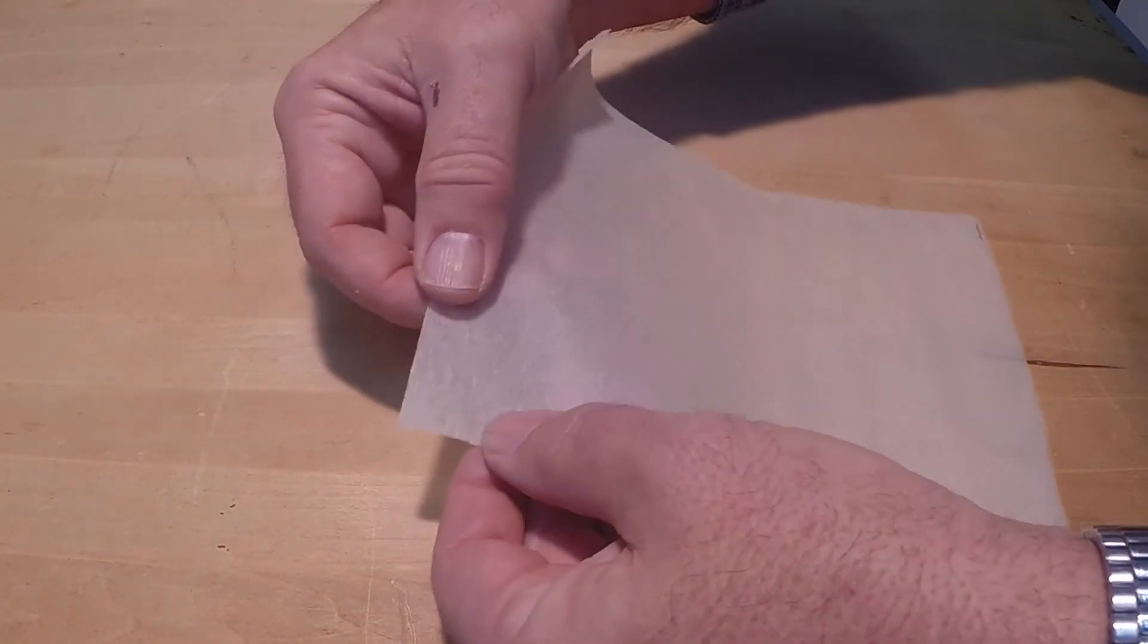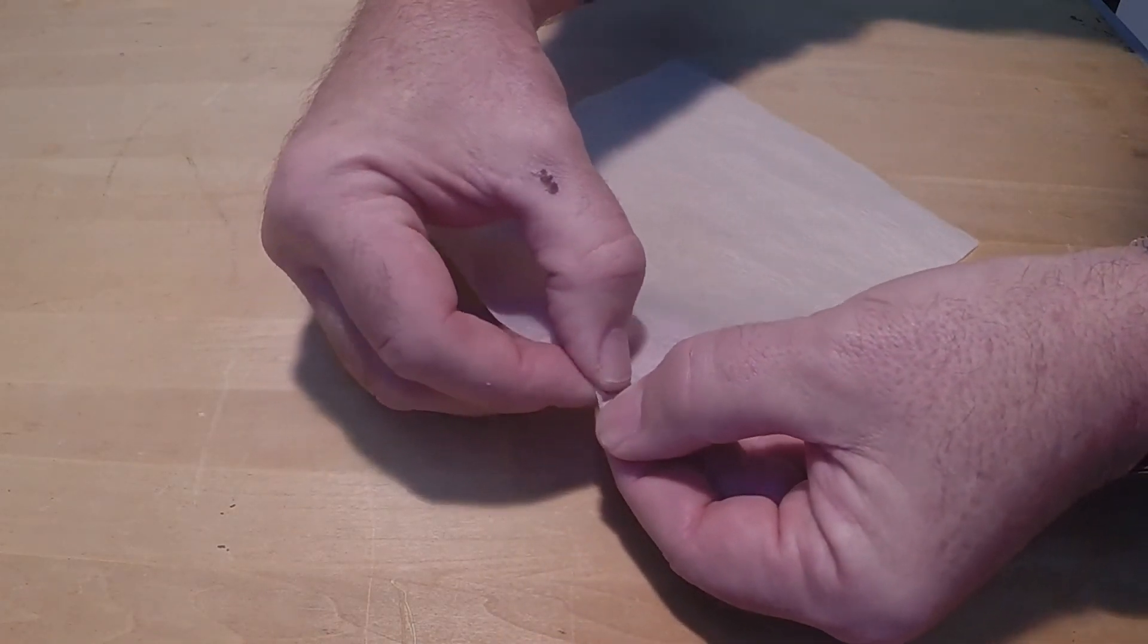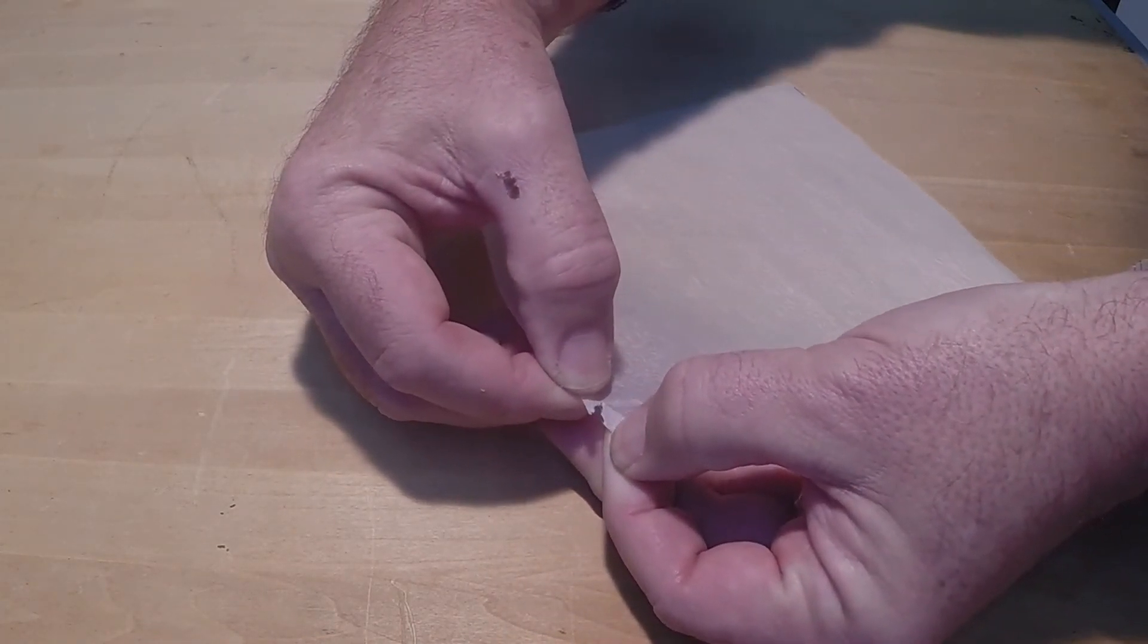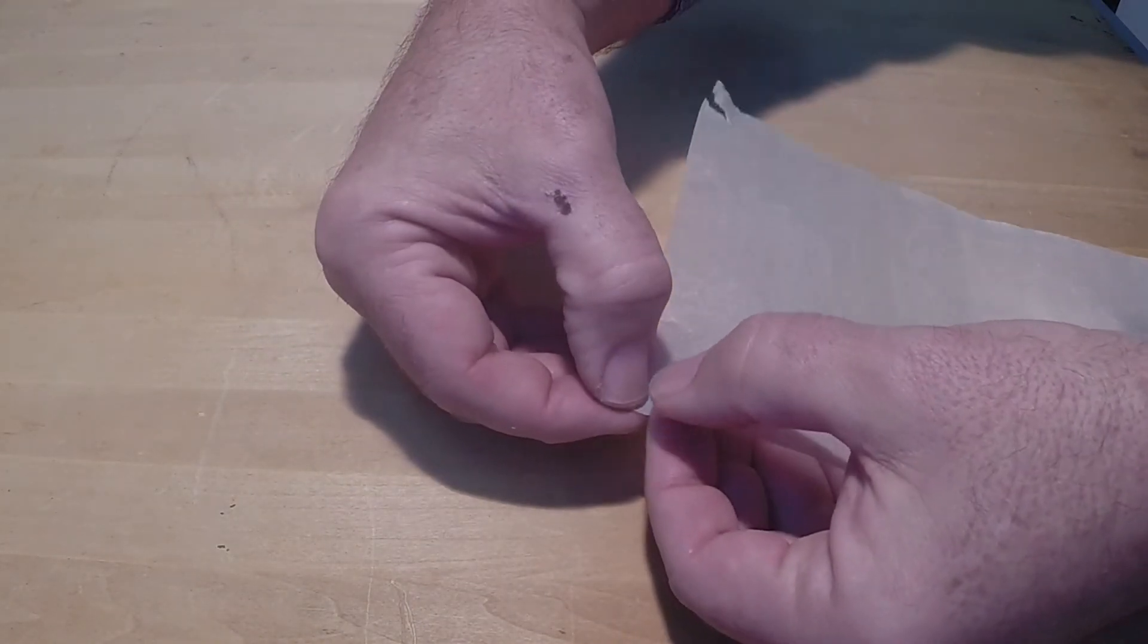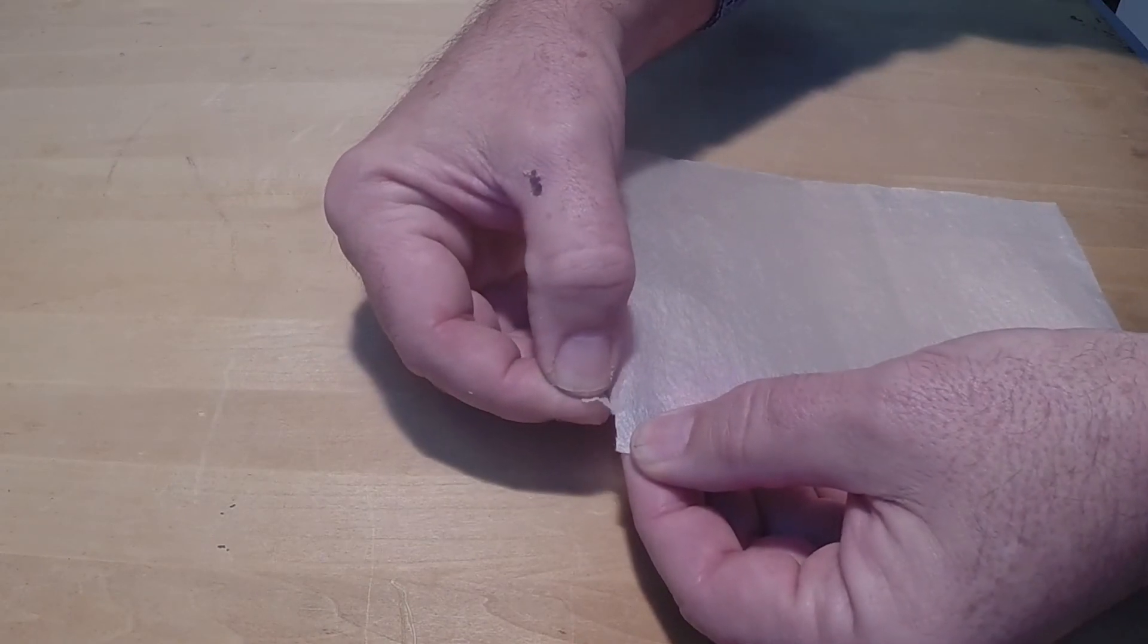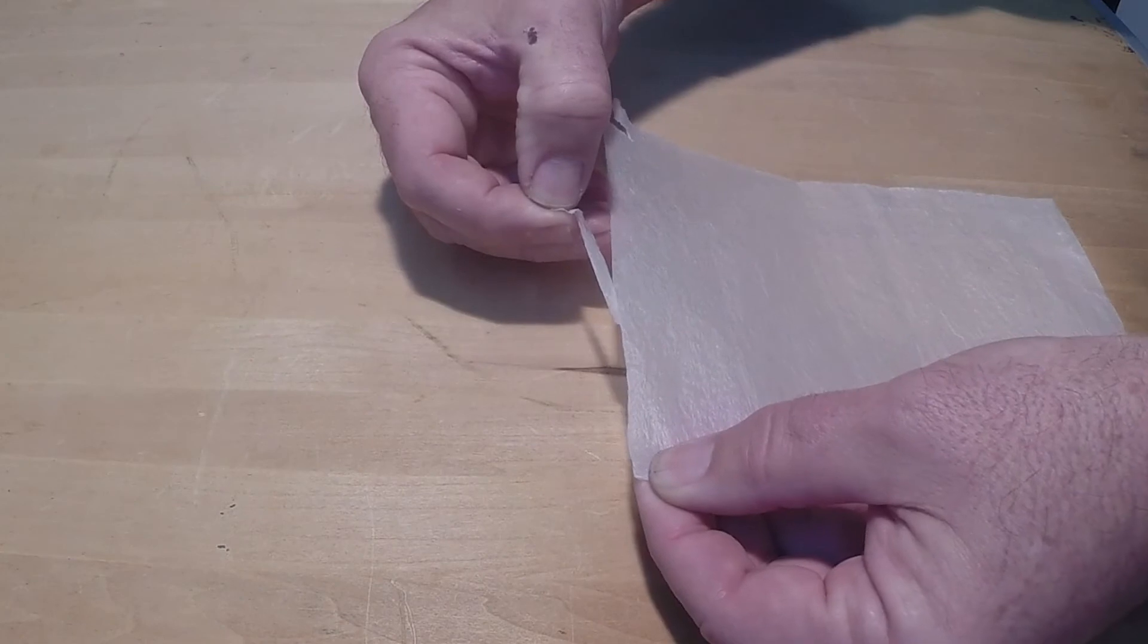Before tissue can be attached to an indoor model, it must be shrunk. If it is applied as purchased, moisture will cause it to shrink, warping the surfaces and making them unflyable. Take a sheet of tissue and make a small tear in a corner. Note the direction the tear wants to go. This is the direction of the grain.